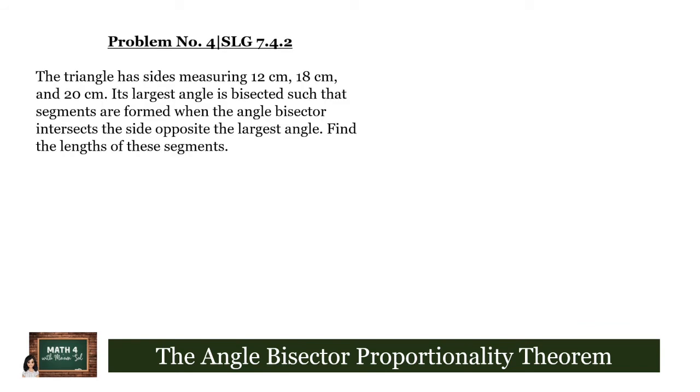Let us also solve problem number 4 from SLG 7.4.2. The problem reads, the triangle has sides measuring 12 cm, 18 cm, and 20 cm. Its largest angle is bisected such that segments are formed when the angle bisector intersects the side opposite the largest angle. Find the lengths of these segments. Since there was no figure given,